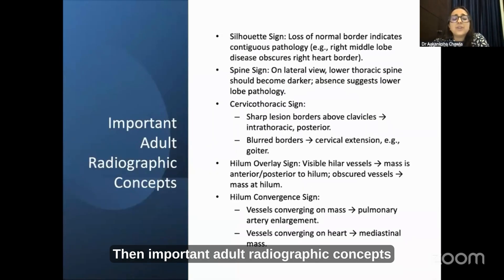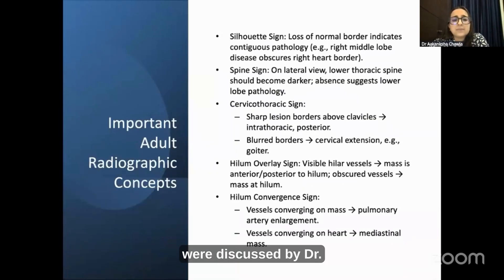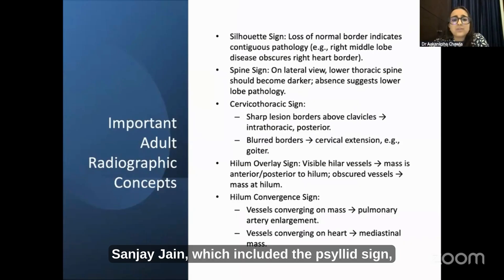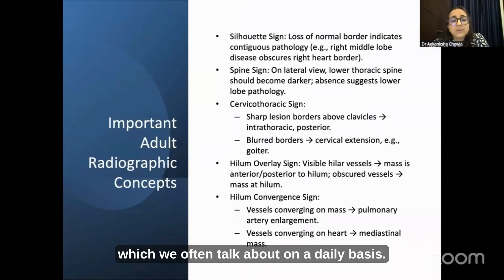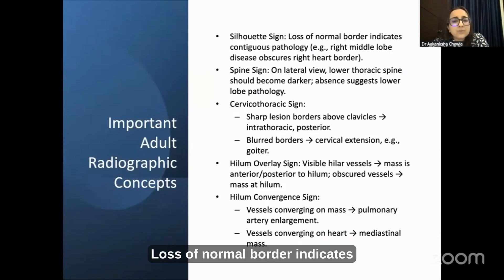Important adult radiographic concepts were discussed by Dr. Sanjay Jain, which included the silhouette sign — something very important which we often talk about on a daily basis. Loss of a normal border indicates contiguous pathology.